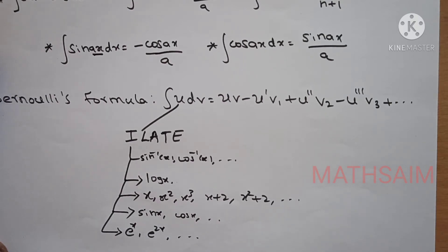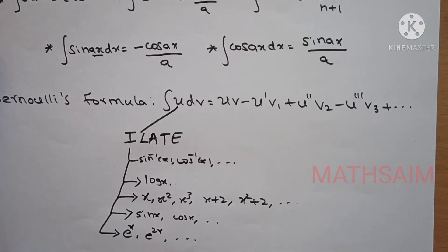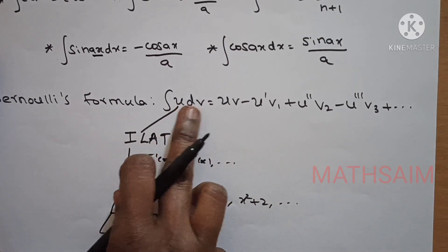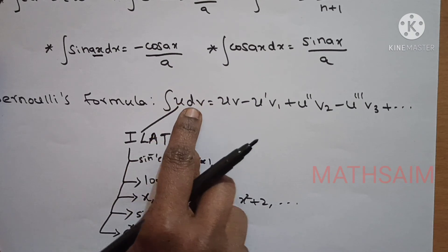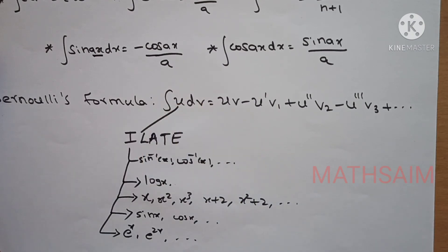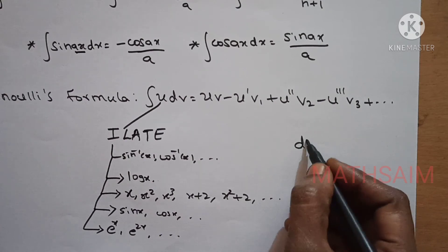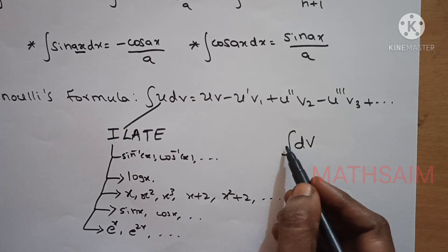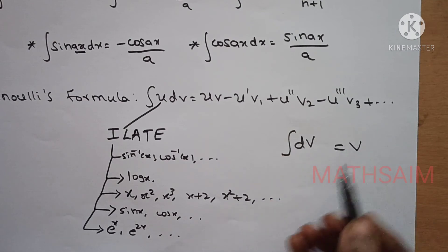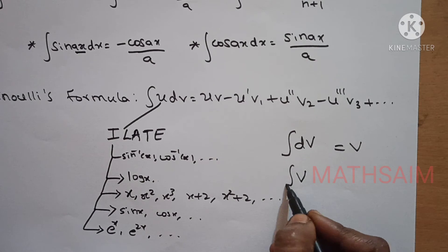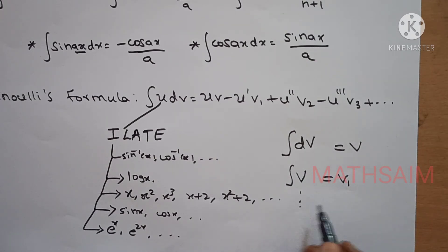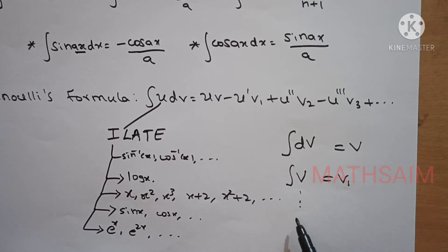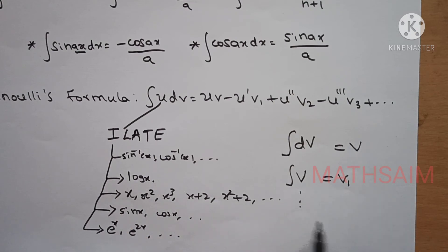Now, u will be selected. The remaining term will be considered as dv. They will not be in the higher priority — they will be considered as dv. So, if we consider dv, we need to integrate it to get v. And if we integrate v further, we get v1. If we integrate v1, we get v2, then v3, v4 — we need to do successive integration. Okay?